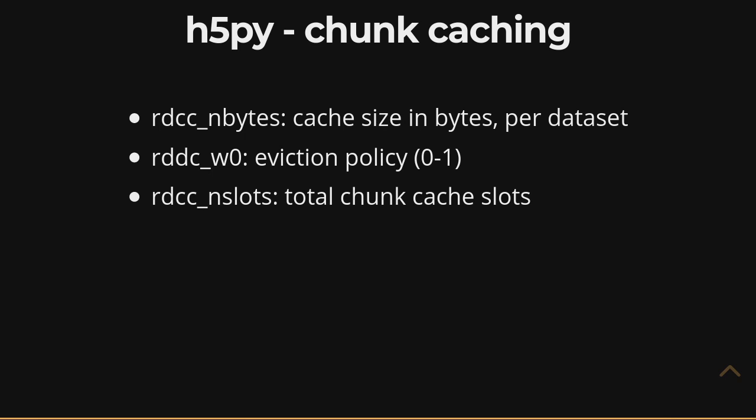If there are thousands of chunks you could potentially store — for example, if you're allocating two gigabytes for your chunk cache and your chunks are really small so you could store 10,000 chunks — then you need to increase nslots significantly. Otherwise you're only ever going to have 512 elements in your cache before eviction starts, which doesn't help you at all. Those three parameters control how HDF5's chunk caching framework is configured from H5Py. They're a little unusual to think about, but at a high level they make sense, and knowing how to use them will make your data processing much more efficient.